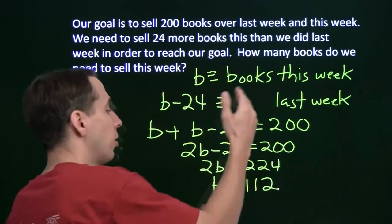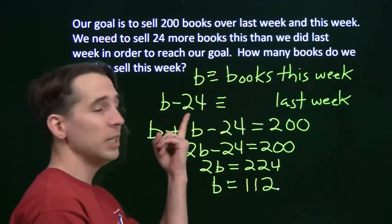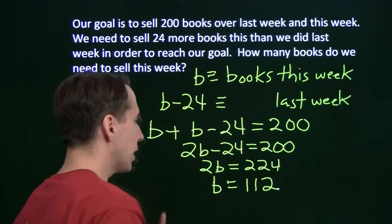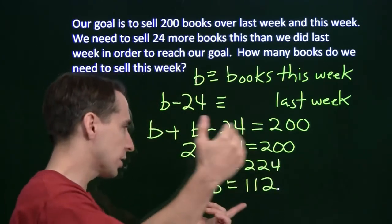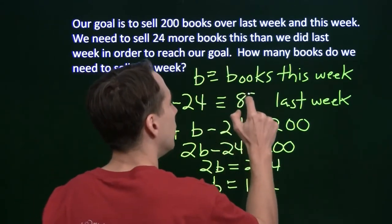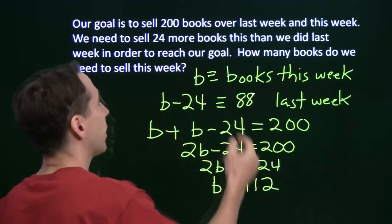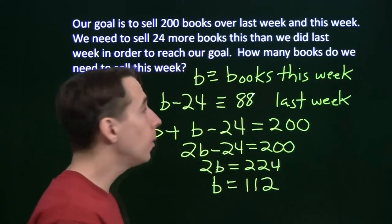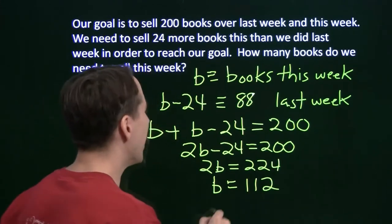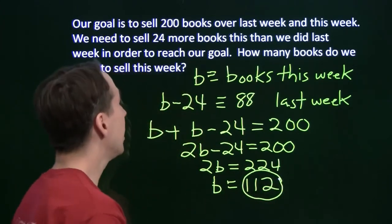Now it's a word problem. I'm going to go back and check our answer. If we sell 112 books this week, that means last week we sold B minus 24. Subtract 24 from this, we'll get to 88. So if we sold 112 this week and 88 last week, that combined does indeed get us to our goal of 200. Maybe you can help us out with that. And we have answered this question. We checked it out. It worked.